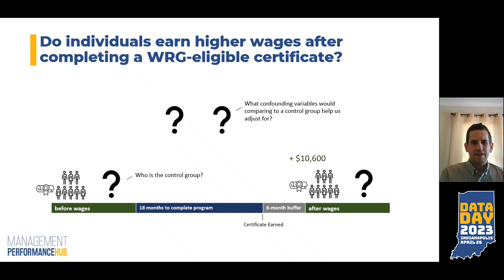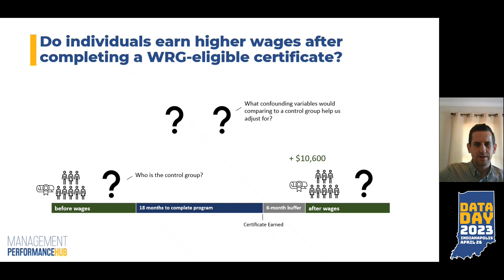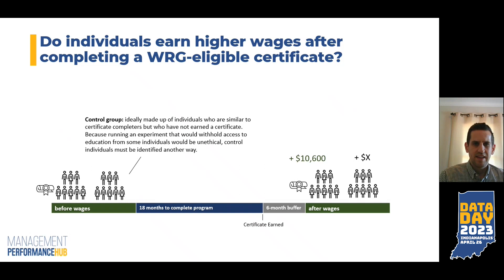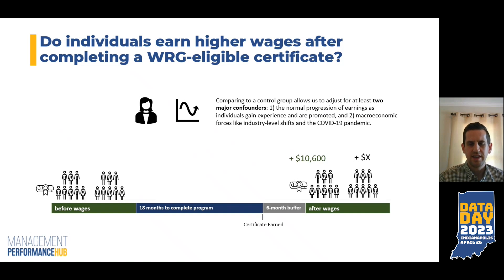From our garden example, we know that measuring or estimating the impact of the certificate isn't that simple. So who's the control group in this case, and what confounding variables does comparing to a control group help us adjust for? Control groups would ideally be made up of individuals who are similar to certificate completers but have not earned a certificate. Because running an experiment that would withhold access to education from some individuals and give it to others would be unethical, we must identify these control individuals in a different way. Using their wage data to adjust our estimate helps us control for at least two major confounders.